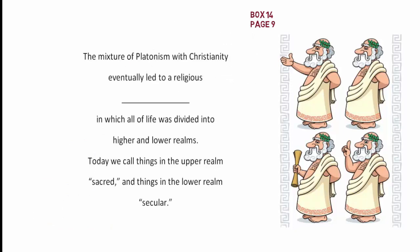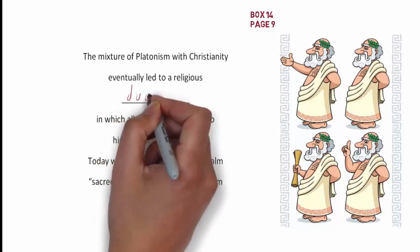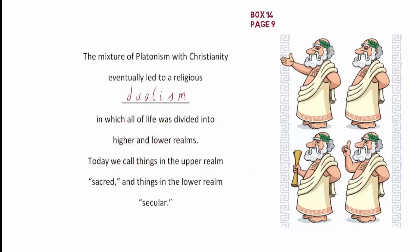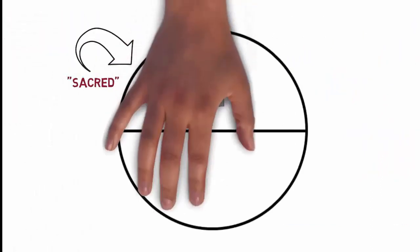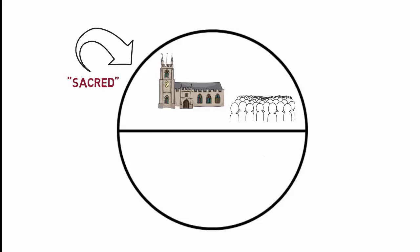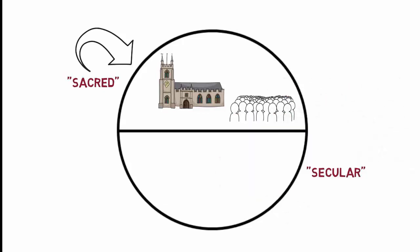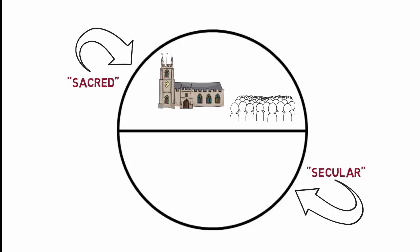This mixture of Platonism with Christianity eventually led to a religious dualism in which all of life was divided into higher and lower realms. Today, we call the upper realm the sacred and things in the lower realm the secular. In the realm of the sacred, people put going to church or listening to a sermon. In the realm of the secular, people will put things pertaining to the physical and temporal realm of human affairs, like baking a pie.